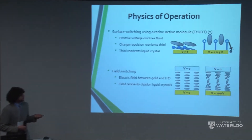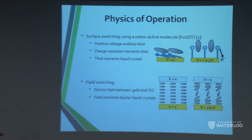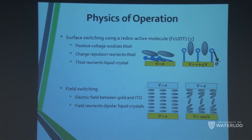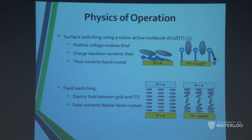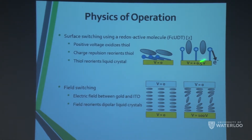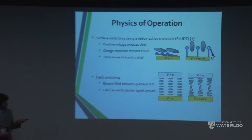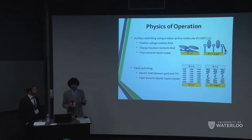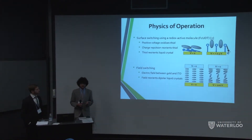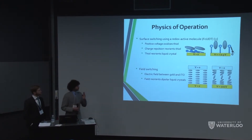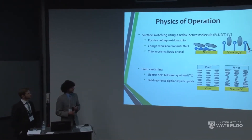The surface switching method involves attaching certain style molecules to the surface of the gold and then applying a small voltage. These molecules undergo a redox reaction — they gain a charge and through electrostatic forces stand upright perpendicular to the gold. This change in boundary condition forces the liquid crystal to reorient itself and therefore change the refractive index.